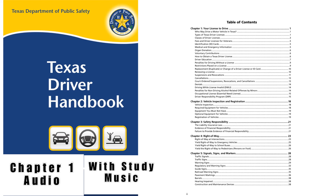Individuals who meet the following criteria may drive a motor vehicle in Texas. Residents: Texas residents who have a valid Texas driver license. New Texas residents who are properly licensed have 90 days after entry into Texas to secure a Texas driver license. Any person while driving or operating any road machine, farm tractor, or implement of husbandry temporarily operated or moved on a highway is exempt from having a Texas license, unless the vehicle is a commercial motor vehicle.